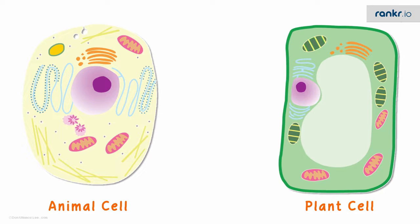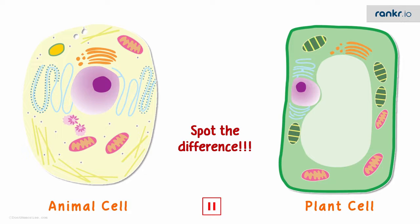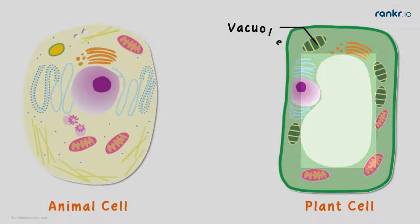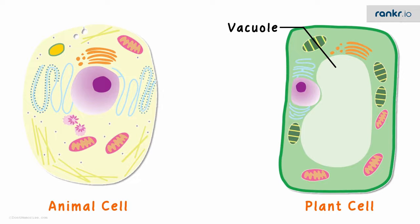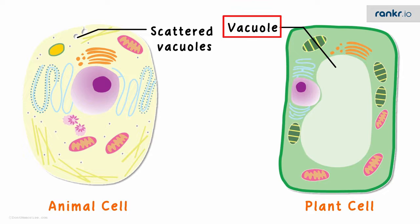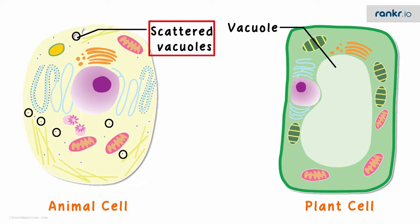There are many other differences. Can you spot them? In the plant cell, there is a large empty structure called the vacuole. In the animal cell, there are several smaller ones scattered all over the cytoplasm. The plant cell has one single vacuole, while the animal cell has several smaller ones.